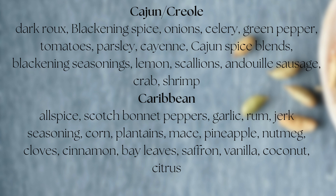Cajun/Creole: dark roux, blackening spice, onions, celery, green pepper, tomatoes, parsley, cayenne, Cajun spice blends, blackening seasonings, lemon, scallions, and andouille sausage, crab, shrimp.